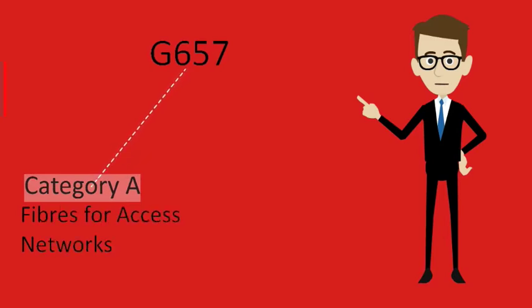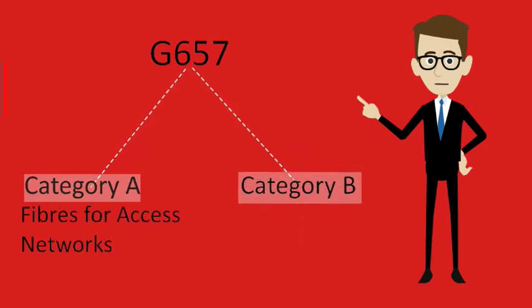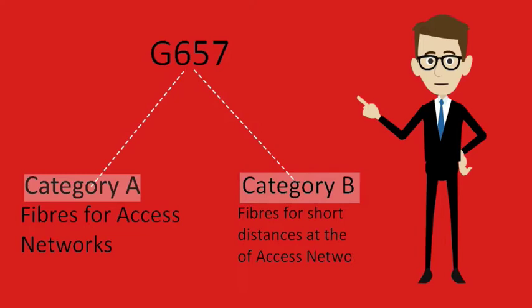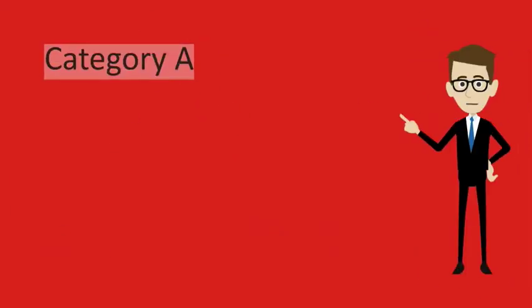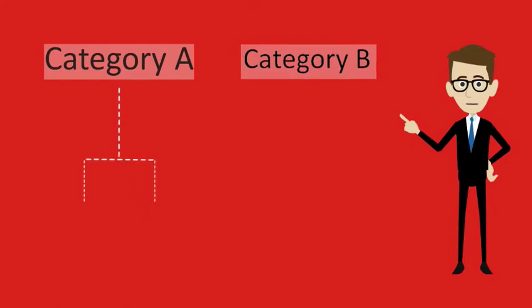Category A, fibers for access networks. Category B, fibers for short distances at the end of access networks. Each category A and B is broken up into two subcategories.